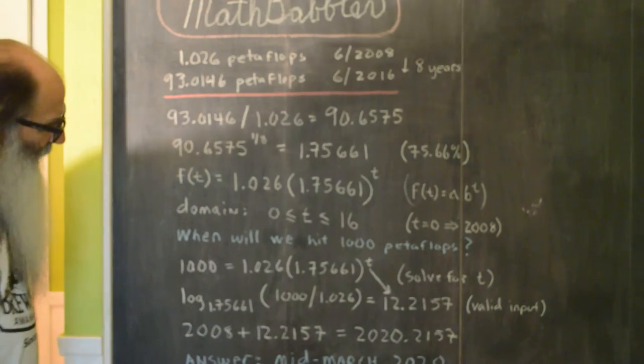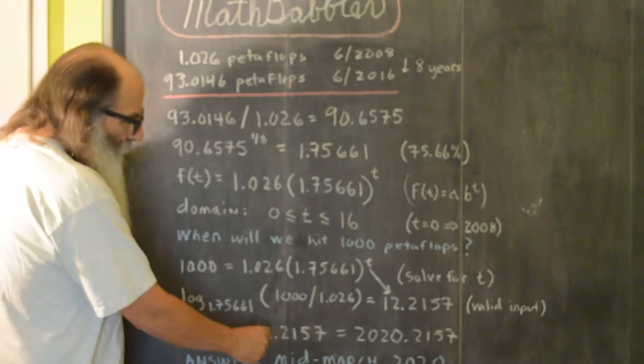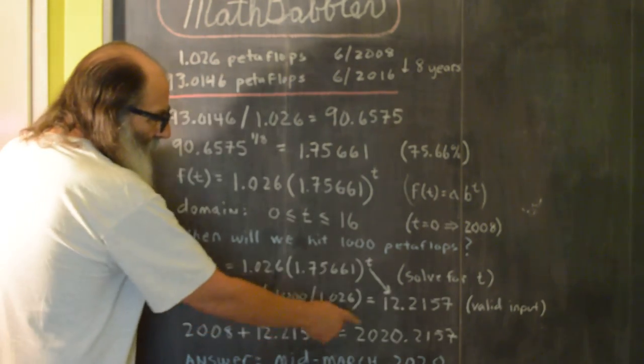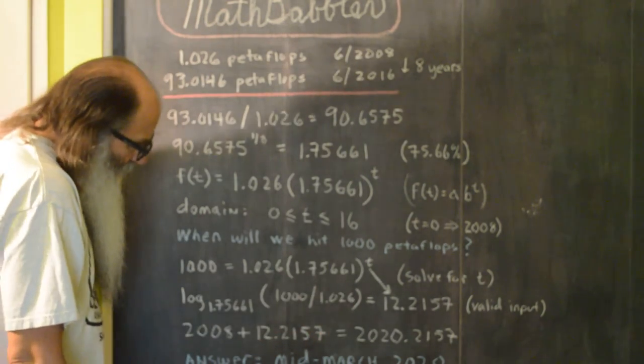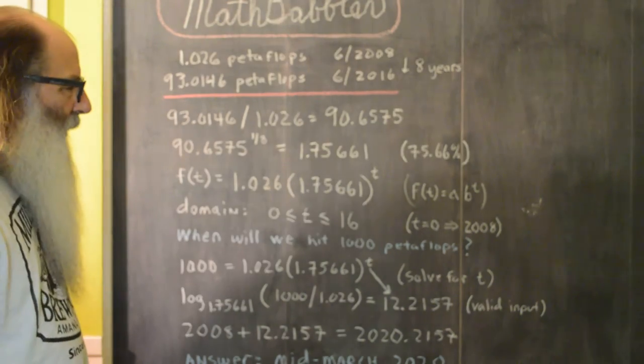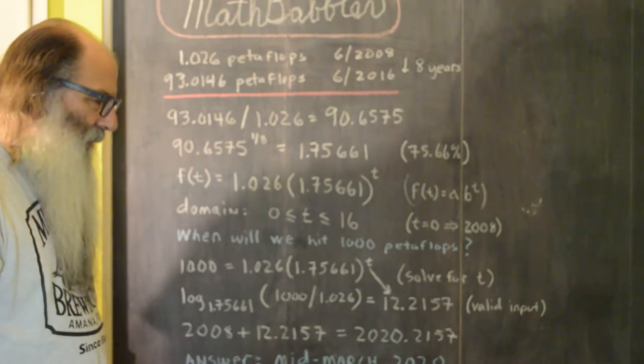So we take the base year 2008, add 12 to it, and then tack on the remainder. And so our answer is mid-March 2020 is when we might hit exascale computing.